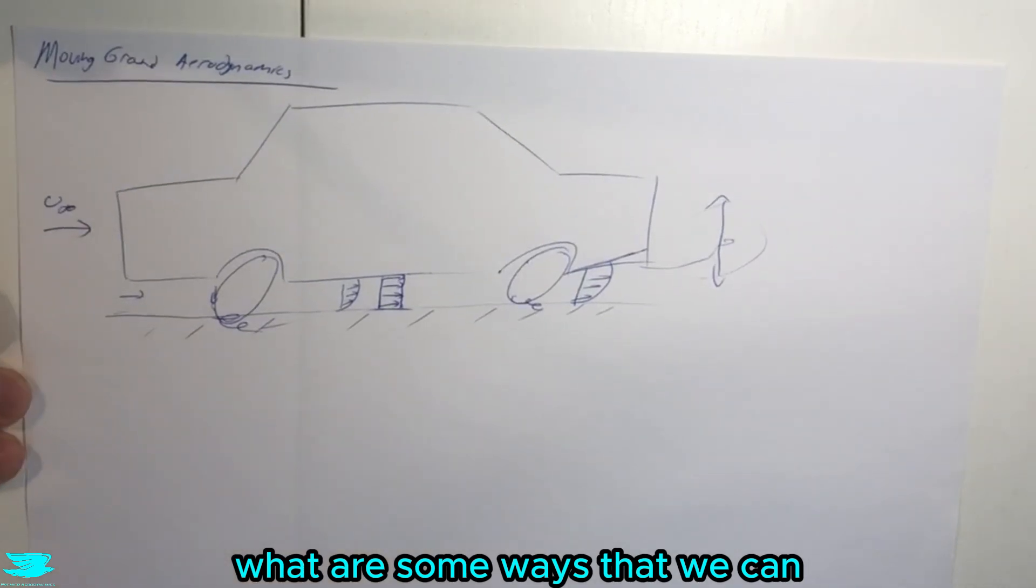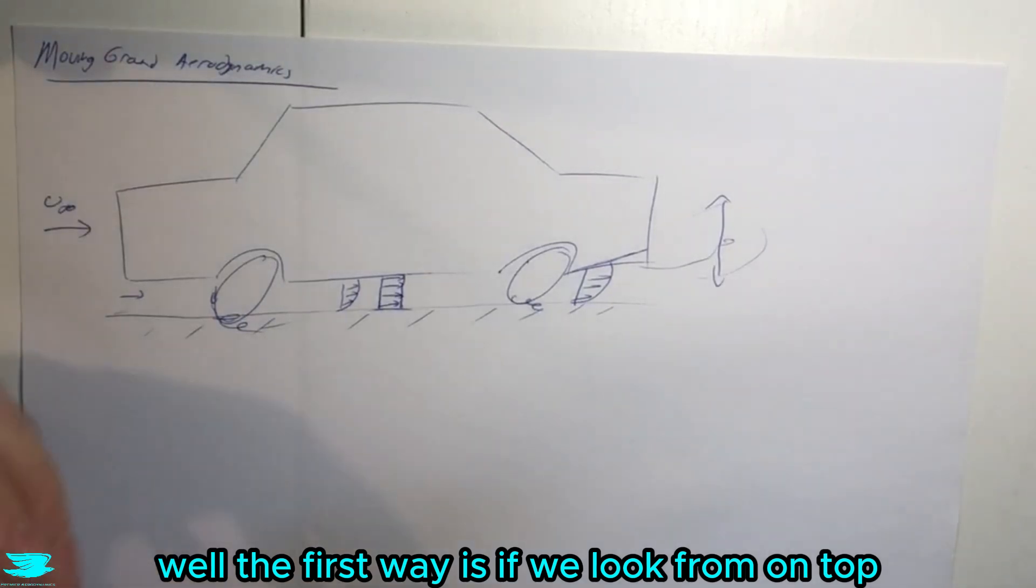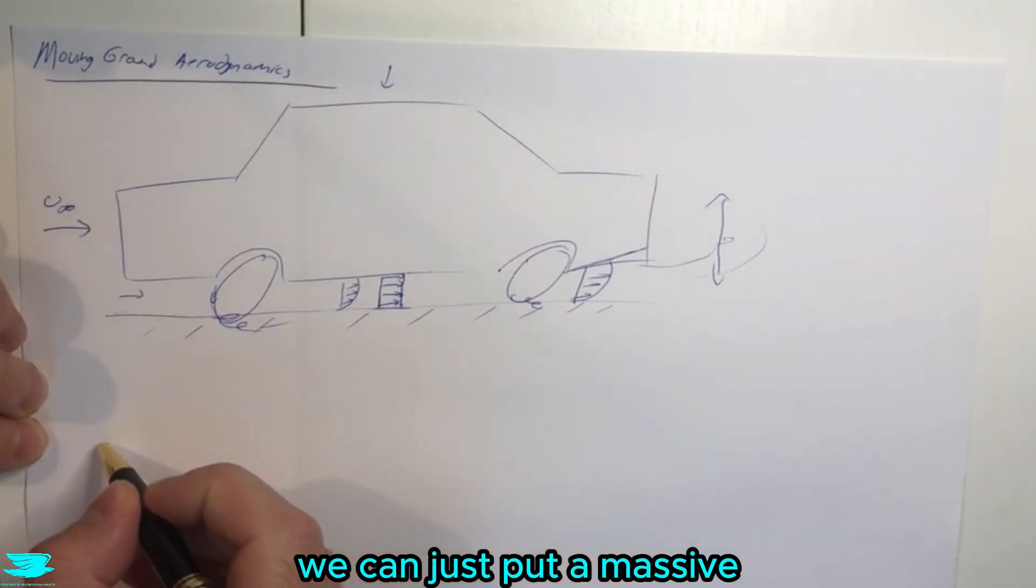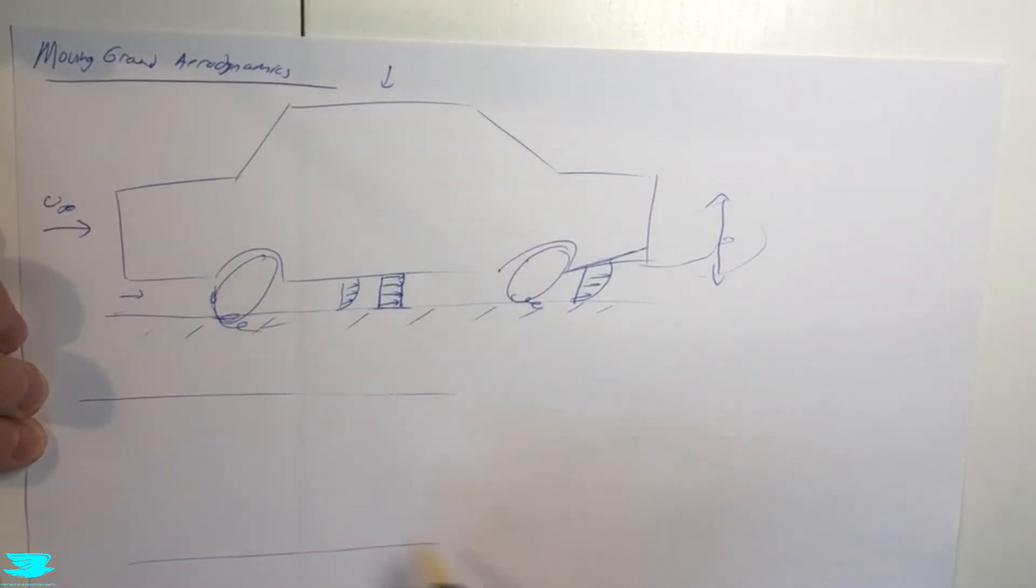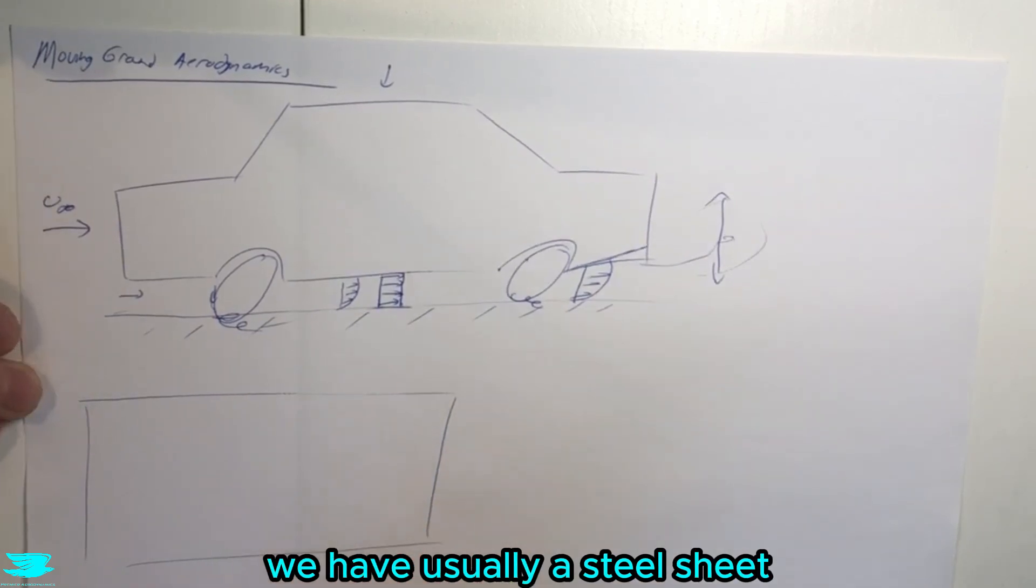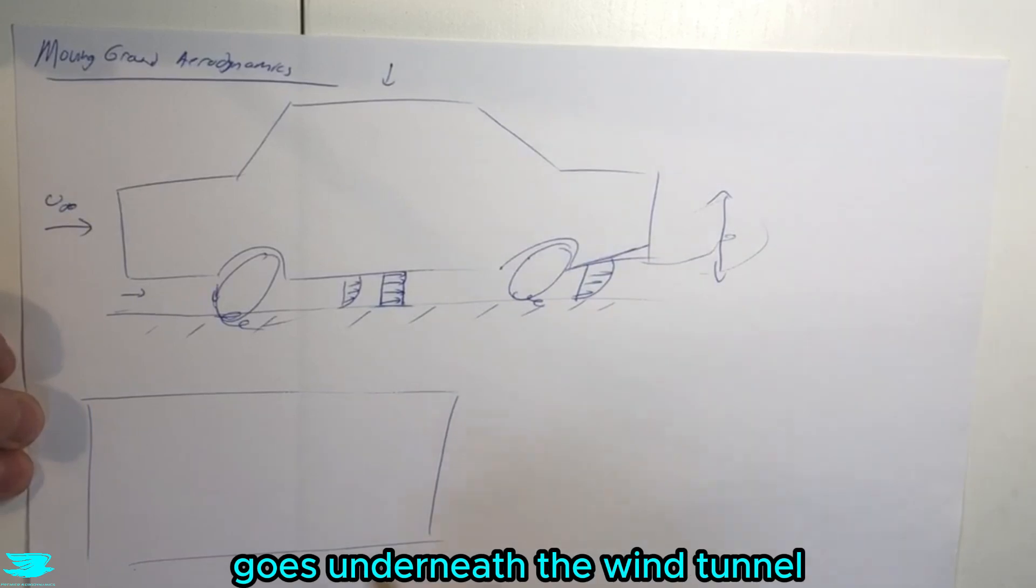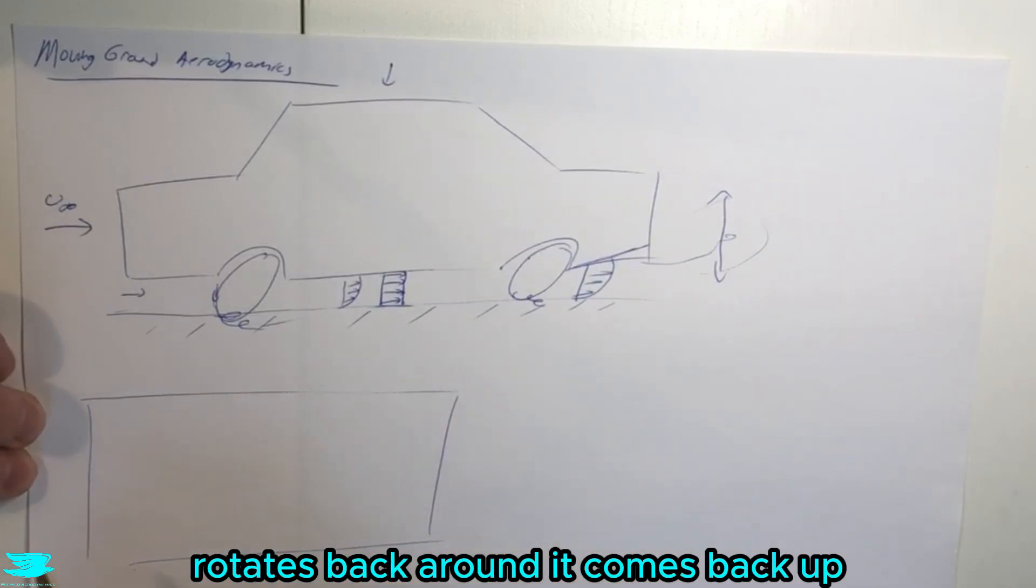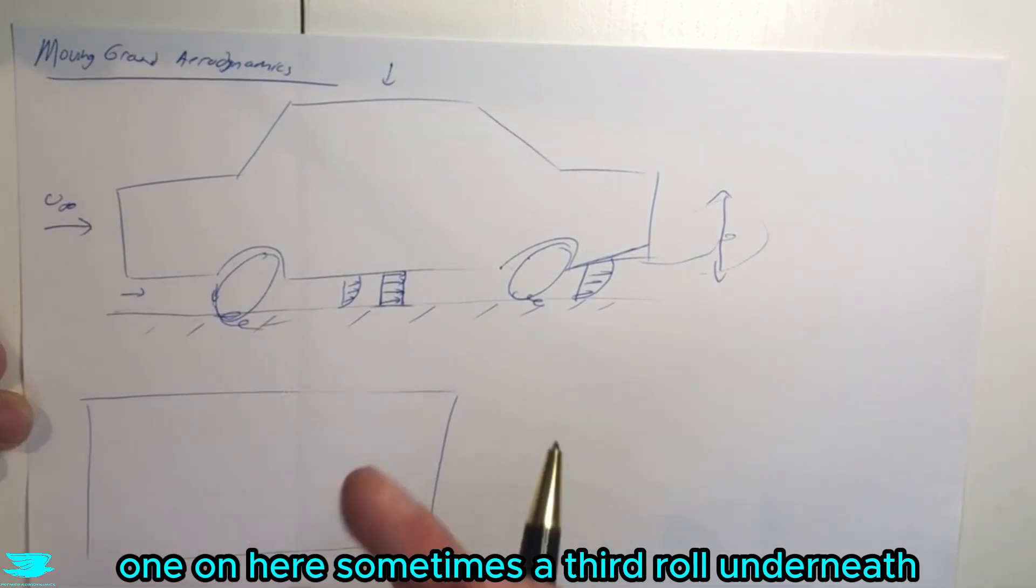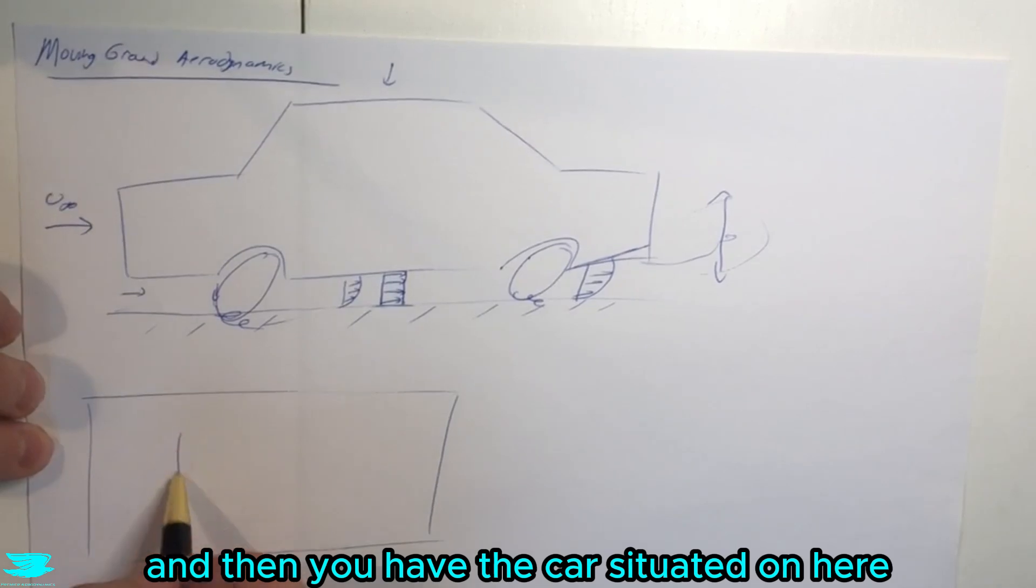Now, what are some ways that we can make the ground moving? The first way, if we look from on top, we can just put a massive rolling road here. We have usually a steel sheet or a plastic sheet that rotates around, goes underneath the wind tunnel, rotates back around, and usually two rollers, sometimes a third roller underneath to tension the belt.